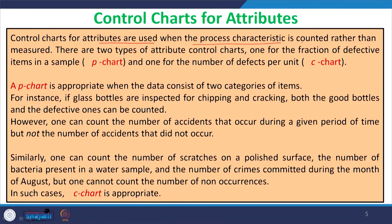Attributes are those process characteristics which are counted, not measured. If you are measuring something, it is a variable; if you are counting it, it is an attribute. For example, if you have a lot of 20 products and you count that 4 products are defective and 16 are acceptable, this type of count gives birth to the control chart for attributes.